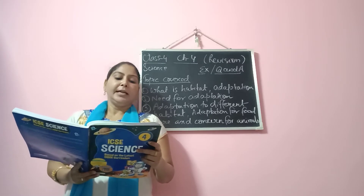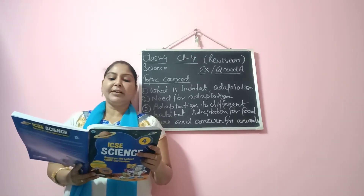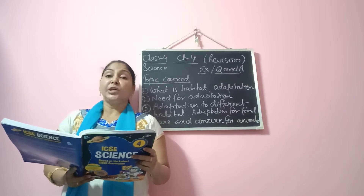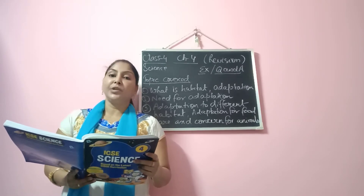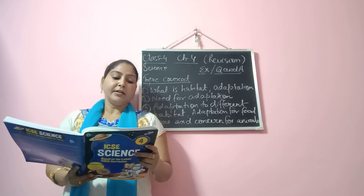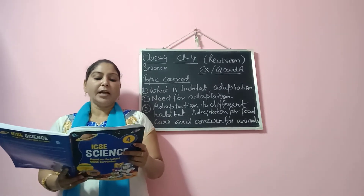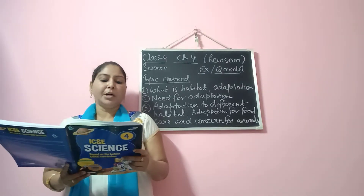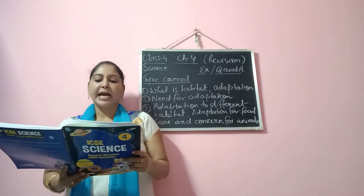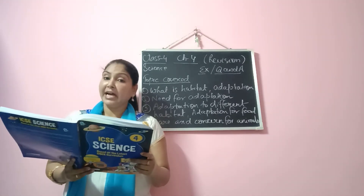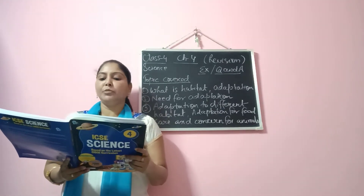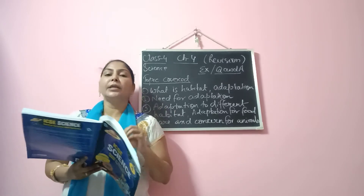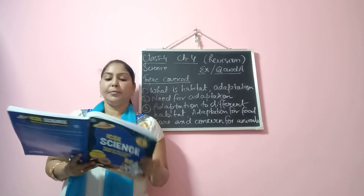Question 3: Dash animals have well-developed body and sense organs which enable them to sense changes in the surrounding — the answer is terrestrial animals. Question 4: Frog and goats are examples of amphibians. Question 5: Birds have dash body that helps them to cut through the air and fly easily — so what shape body do they have? They have a streamlined body.